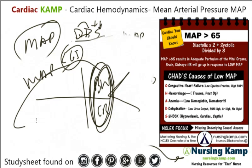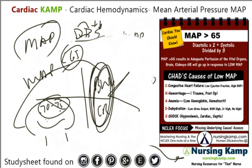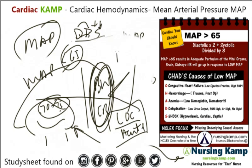An interesting thing about mean arterial pressure is that for the brain, which also needs perfusion, it needs to be 70 to 75. If it's less than 70 to 75, the brain is not being perfused. So you'll have decreased level of consciousness, and that would be acute. That's why restlessness and decreased level of consciousness are always acute and need to be assessed — it's usually related to perfusion or hypoxia.